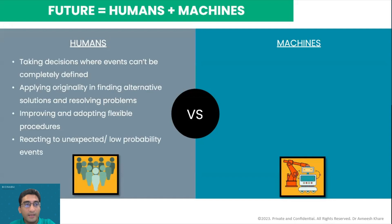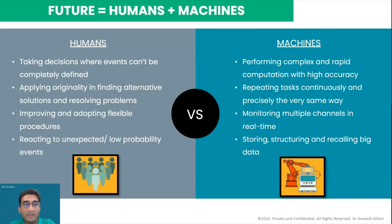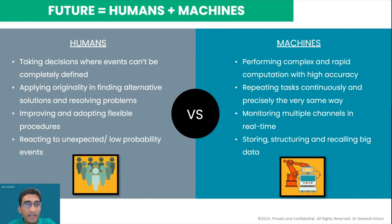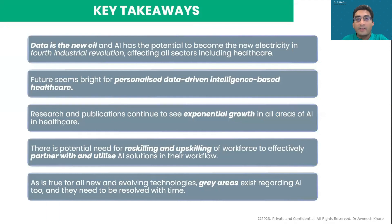To strengthen that point, let's look at the different pros of humans versus machines. Humans can make decisions with incomplete data, can be creative and flexible in their approach, and can react to unpredictable events. Machines, on the other hand, can perform complex and rigid calculations with high accuracy, can repeat tasks continuously and precisely, can monitor multiple channels in real time, and can store, structure, and recall big data. Both have their advantages and disadvantages, and when combined together they will make the future of humanity.